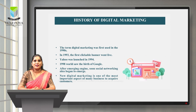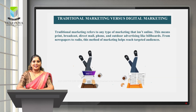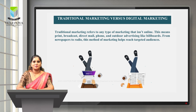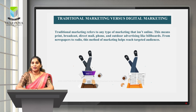In this slide, we can see traditional marketing versus digital marketing. Traditional marketing refers to any type of marketing that isn't online — this means print, broadcast, direct mail, phone, and outdoor advertising like billboards. From newspapers to radio, these methods of marketing help reach targeted audiences. Traditional marketing plays an important part in reaching local audiences, and ads can be kept for a longer period of time if there are physical copies.